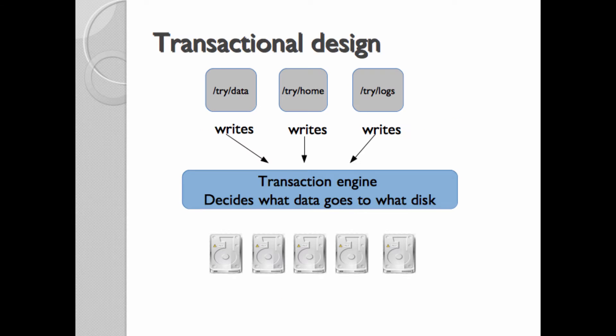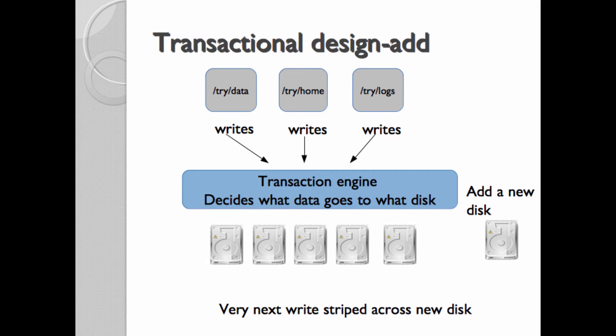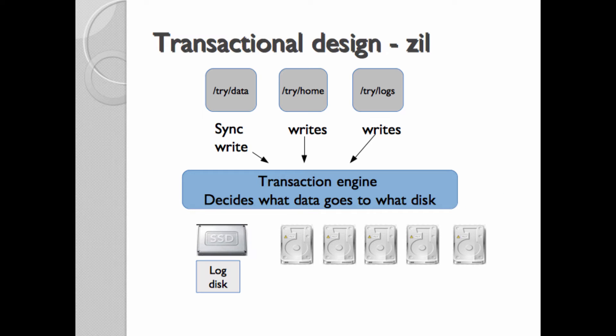Because ZFS knows the difference between storage types, we can do interesting things. In the transactional design, we might have a couple reads and a write — metadata requests — all bundled into the transaction engine. This is simplified, but it's basically pulling in what's coming in from different datasets and deciding what goes to what disk. When a disk is added, the very next write is striped across it.